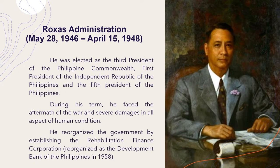Roxas Administration, May 28, 1946 to April 15, 1948. He was elected as the third president of the Philippine Commonwealth, first president of the Independent Republic of the Philippines, and the fifth president of the Philippines. During his term, he faced the aftermath of the war and severe damages in all aspects of human condition. He reorganized the government by establishing the Rehabilitation Finance Corporation, reorganized as the Development Bank of the Philippines in 1958. During his term, a military assistance pact was signed in 1947, granting the United States a 99-year lease on designated military bases in the country.